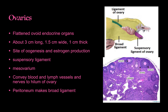The ovaries are suspended in the pelvic cavity by the ligament of the ovary and the suspensory ligament of the ovary, which are different structures — both attached to the broad ligament. This is the site of oogenesis and estrogen production. The broad ligament is made up of the mesovarium, through which blood vessels, lymph vessels, and nerves are conducted to the hilum of the ovary. Inside the ovary there is the medulla, stroma, follicles, and oocytes within the follicles.